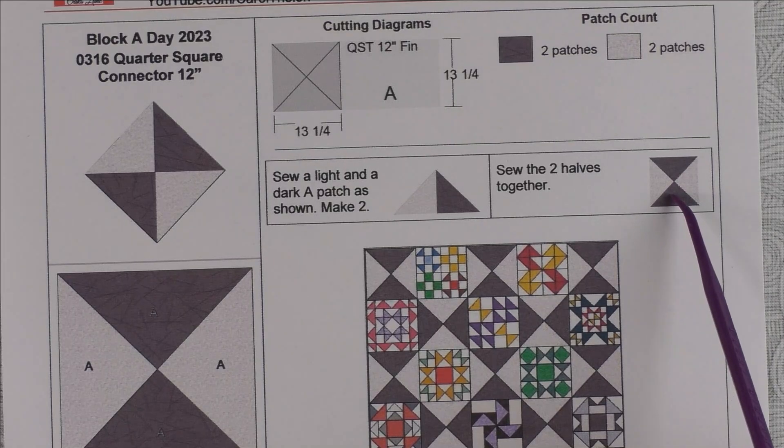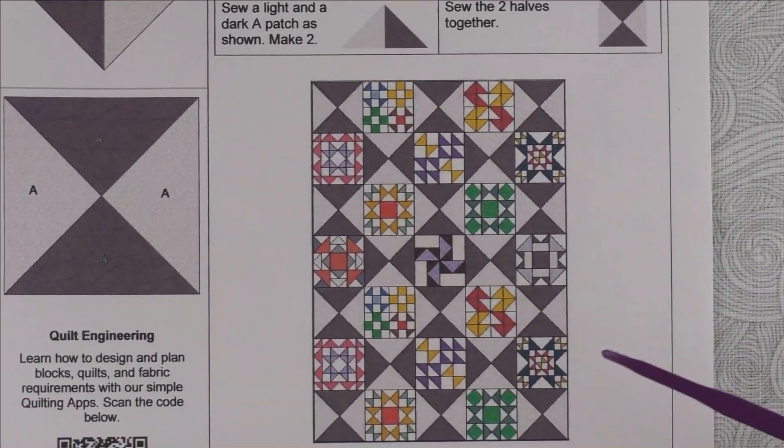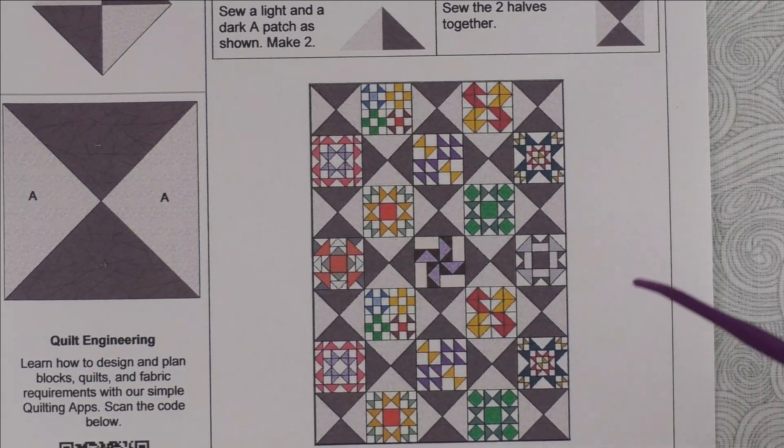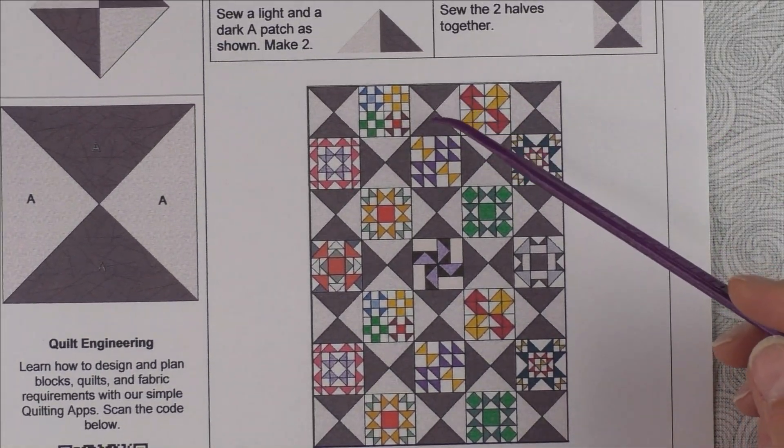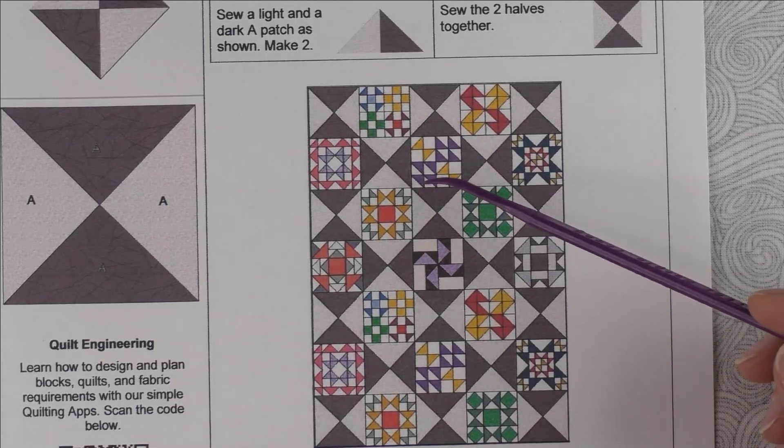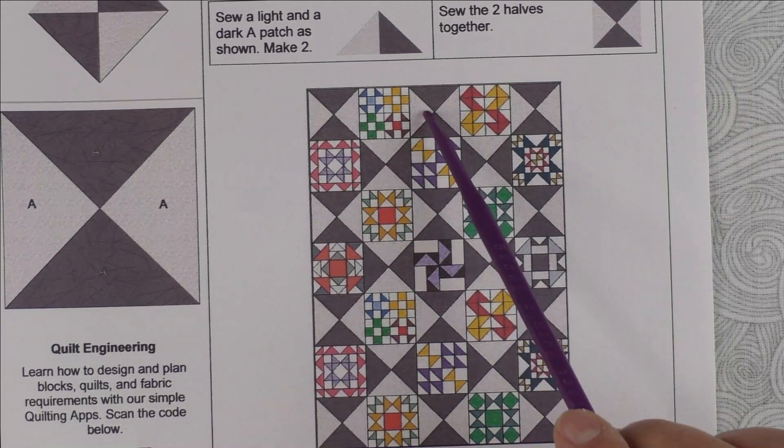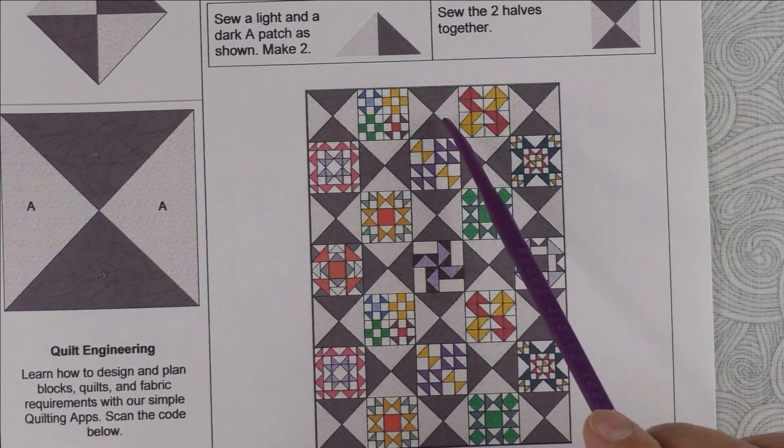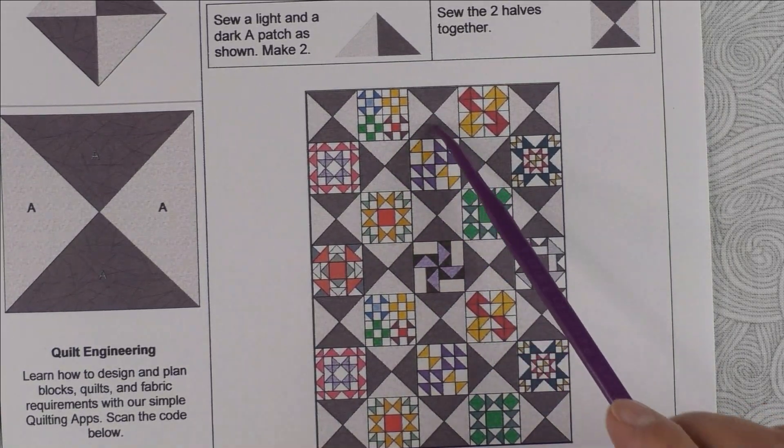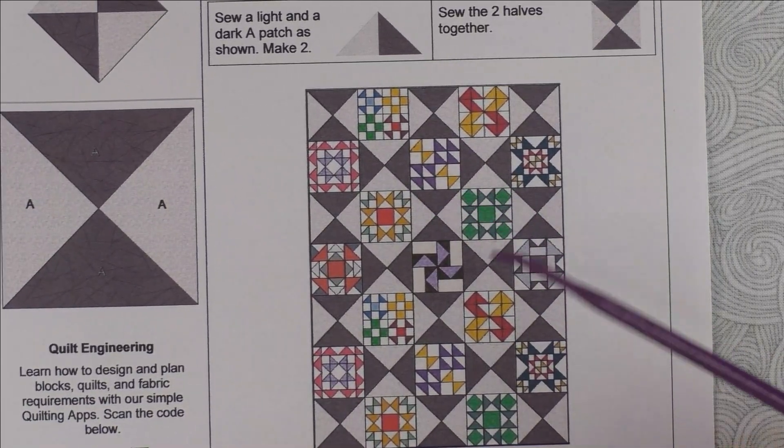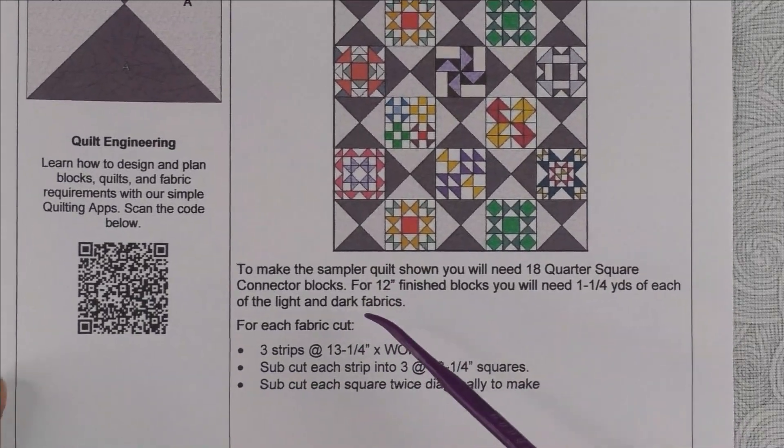This is the sampler setting number four, I believe. You can use these blocks to set your sampler blocks. They create one block with a light background and one block with a dark background, and it looks like the blocks are set on point.